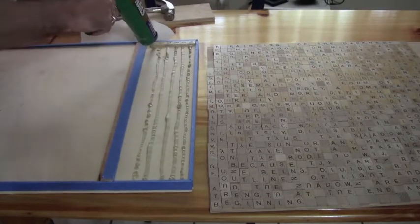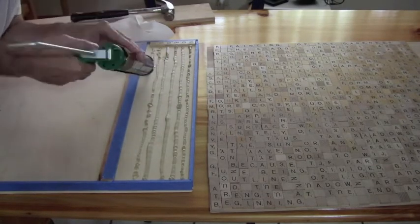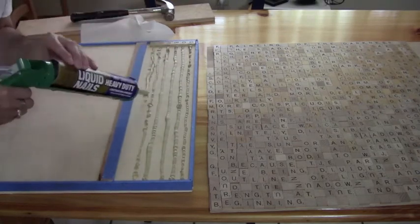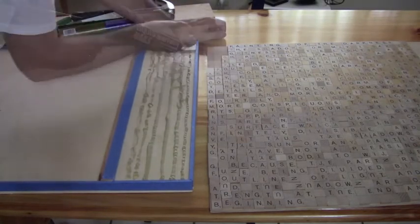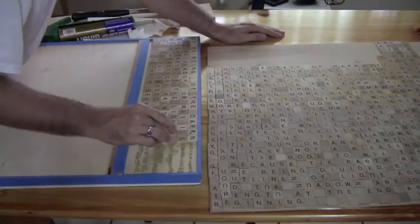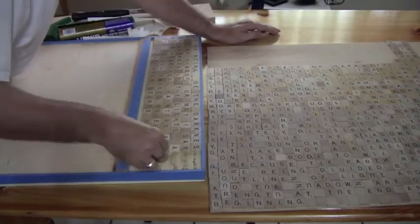On the first try here, I glued all over in this complete section that would be, I think, six squares down and however many it is across. I realized that this liquid nails adhesive actually started drying too quickly.